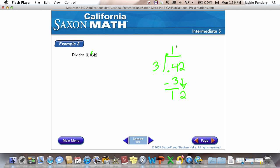I bring down. 3 goes into 12, 4 times. 4 times 3 is 12. So, my answer then is 0.14. Again, I don't do anything with my decimal down here in the problem. I just move my decimal straight up and then divide like normal.